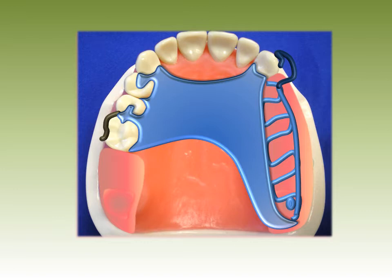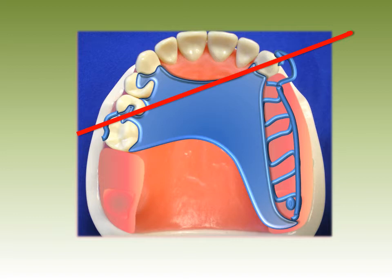Now, the indirect retainer. Look at the fulcrum line once again. Indirect retention is provided by the rests on 4, 5, and 6. Also, the partial can be easily repaired if these bicuspids fail. In both cases the retentive element engages the tooth posterior to the fulcrum line. That means there's less stress on the abutments, because the clasp disengages when the patient bites down.